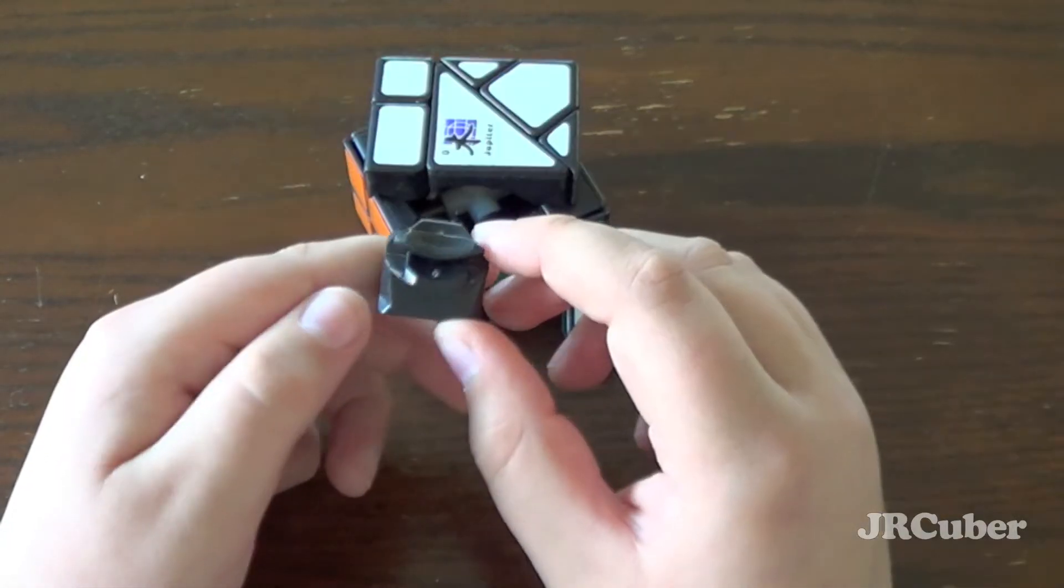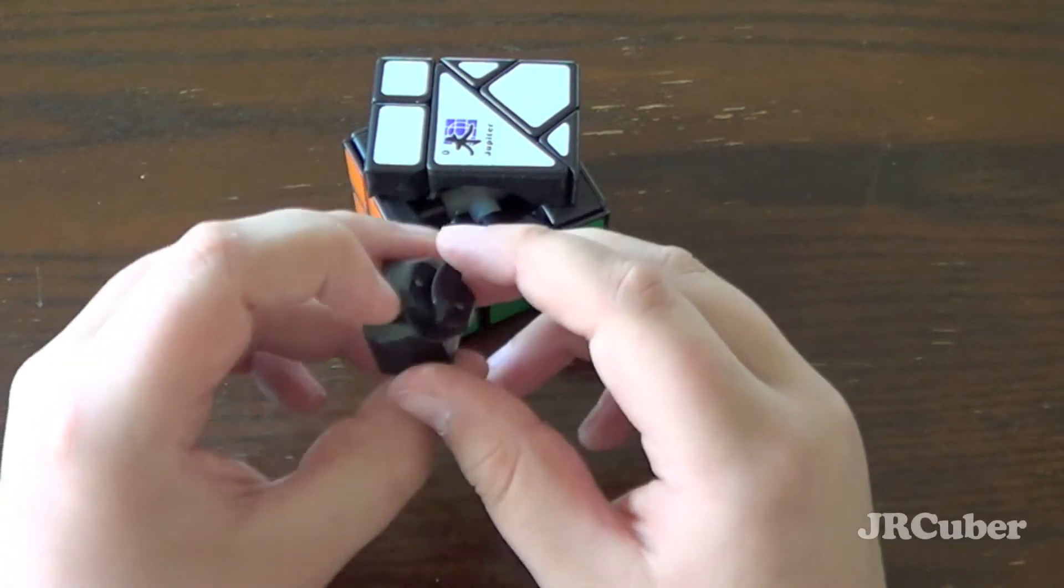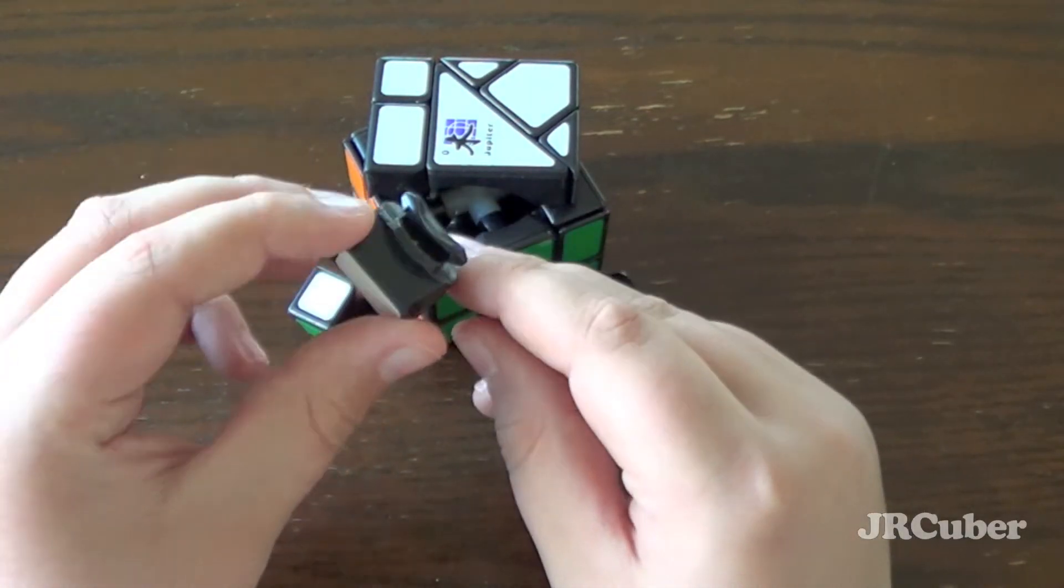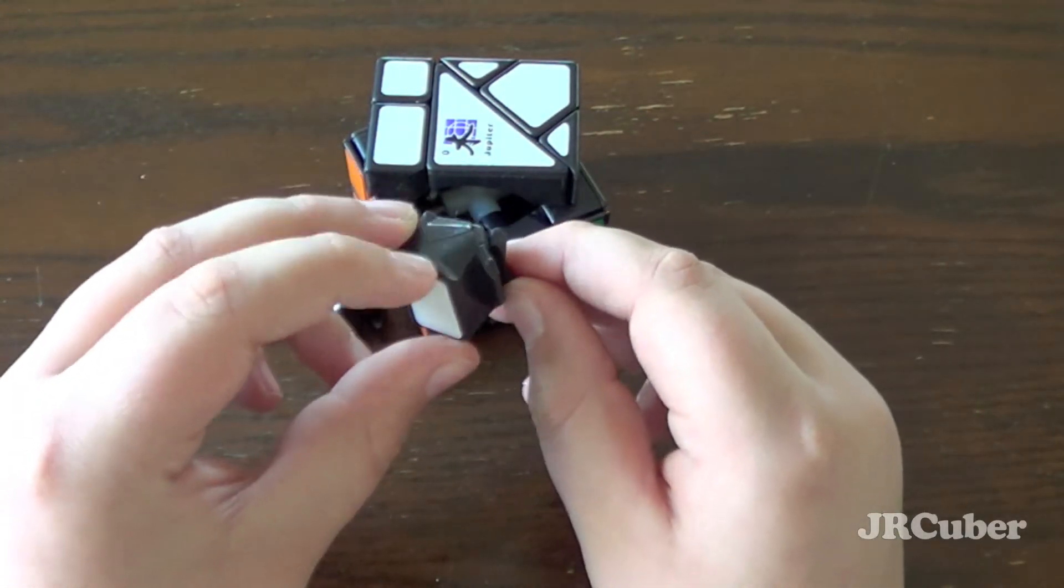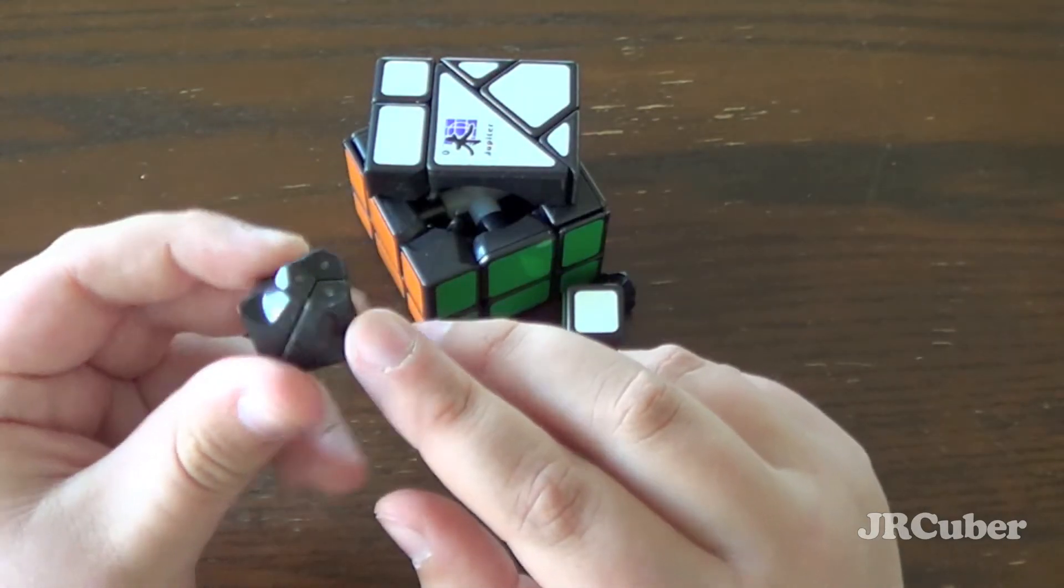There we go. So just as I expected, this cube is exactly like the constrained cube, the way it's made. And if you haven't seen my review on that cube, you should go check it out. The corners are the same, too.